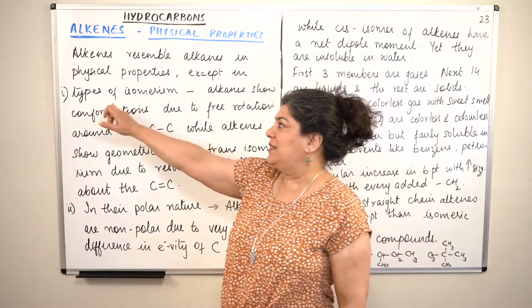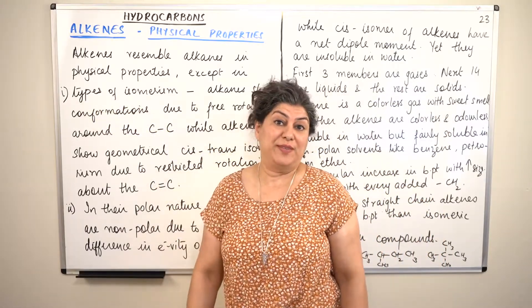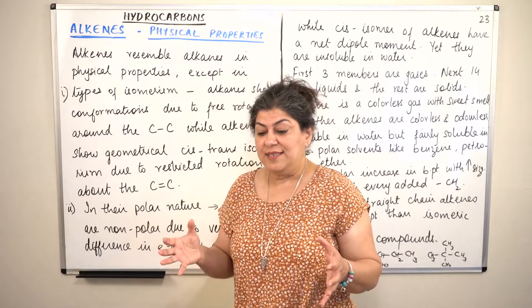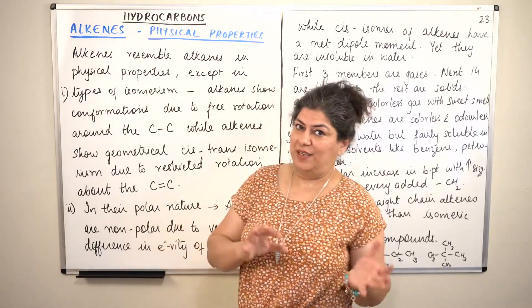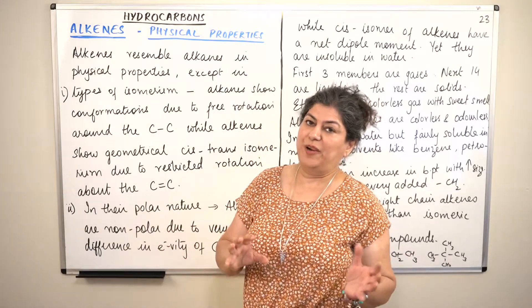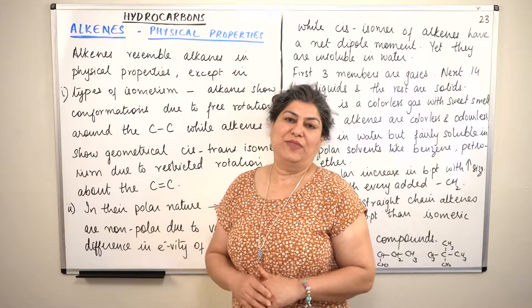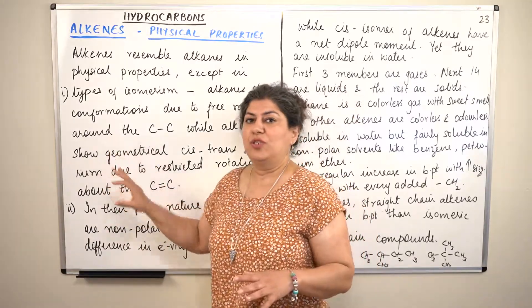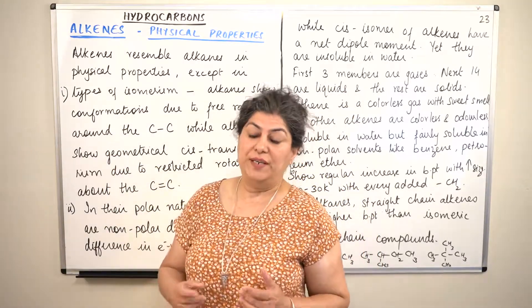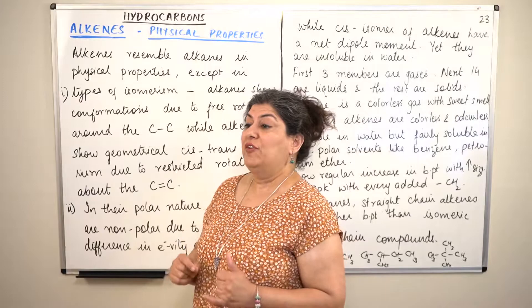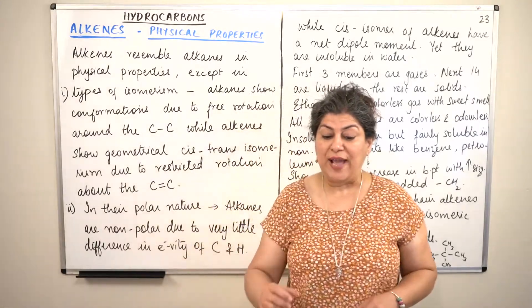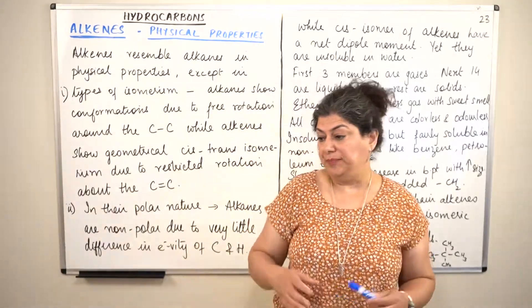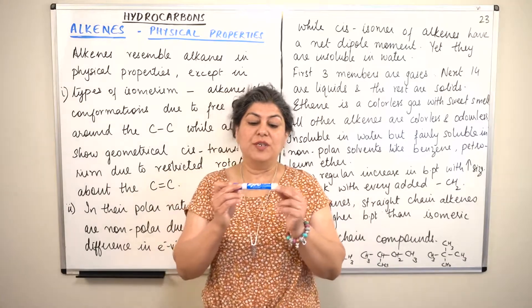Alkenes show a different kind of isomerism while alkanes show a different kind of isomerism. The first difference is in the types of isomerism. In the case of alkanes, in the geometrical isomers, there was only one bond between two carbon atoms.